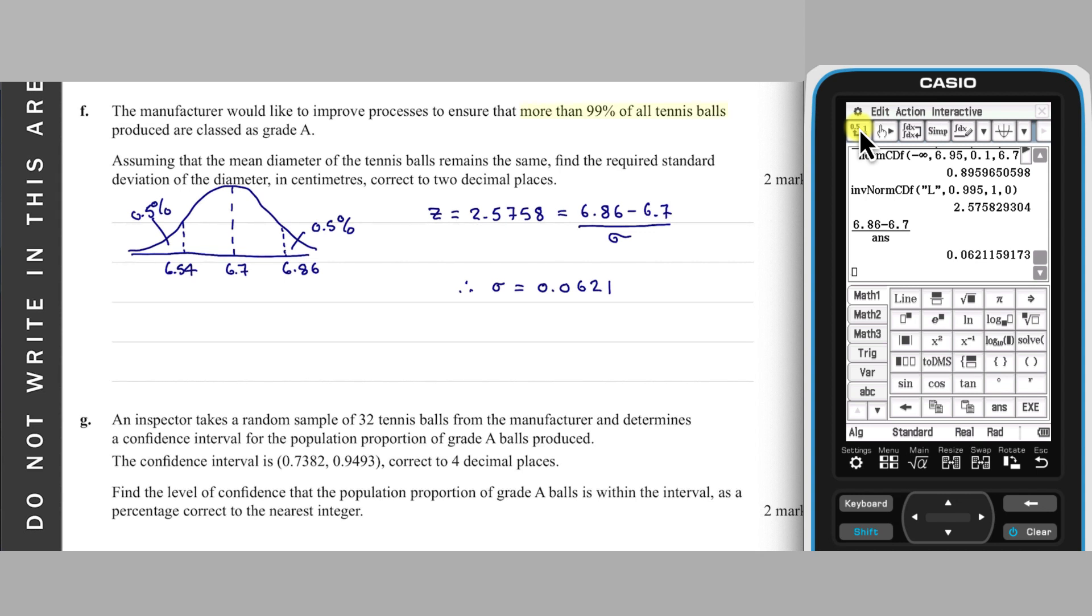As the question asks for more than 99% grade A tennis balls, this will be satisfied by a sigma value of 0.06 or less. So I'm going to give my final answer a sigma between 0 and 0.06.